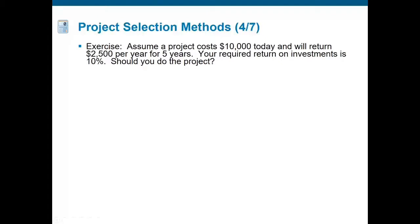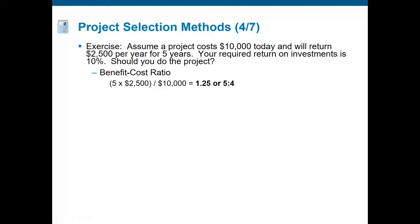Here is an exercise for some of the equations from the previous slide. Assume that the project costs $10,000 in today's money and will return $2,500 per year for five years, with a required return on investment of 10%. The benefit to cost ratio: the benefit is $2,500 times 5, or $12,500, to a cost of $10,000. Dividing both sides by $2,500 gives a ratio of five to four, or 1.25 units of benefit for every one unit of cost.